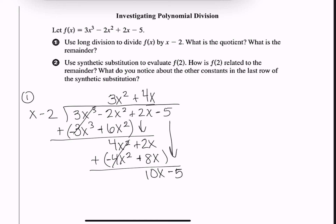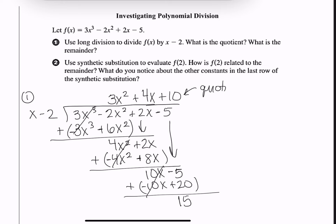Bring down the −5. x times what gives 10x? A positive 10, which goes over the constant. Distribute: 10 times x is 10x, times −2 is −20. Subtract, distribute the negative, add. These cancel, and we end up with a remainder of 15. The quotient is 3x² + 4x + 10, and the remainder is 15.